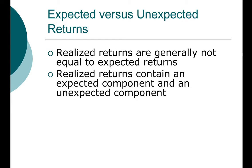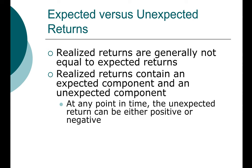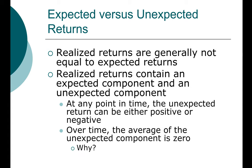This may seem obvious, but I'll take another minute to develop the model formally. The expected component is typically well understood, and it may evolve or change over time, but at any given point in time investors have a pretty good idea of what their expectation is. The unexpected component, on the other hand, can be either positive or negative. Over time, the average of the unexpected component should equal zero.